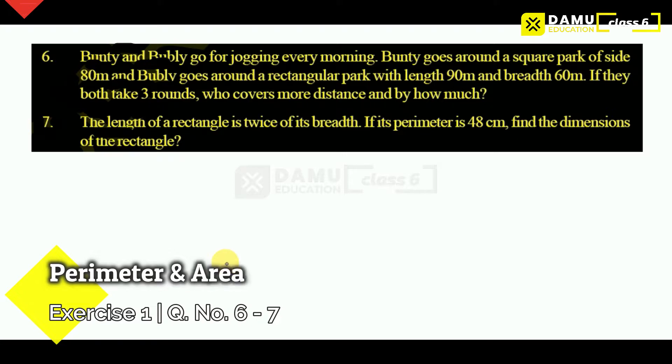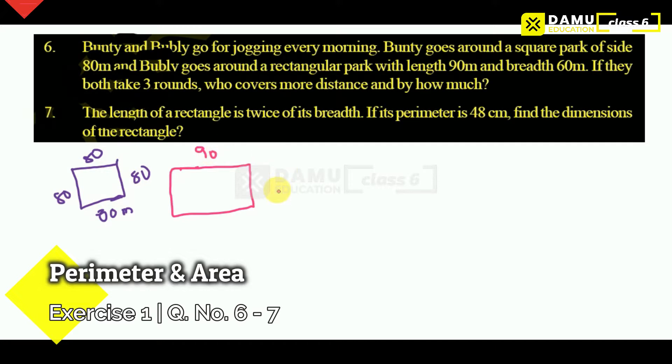Bunty and Bablu go for jogging every morning. Bunty goes around a square park of side 80 meters. So what you can take is square park. What is that distance? 80 meters. 80, 80, 80, 90, this is 60 meters.